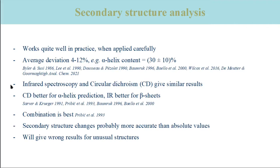We will encounter a second spectroscopic method to estimate secondary structure content: circular dichroism. Generally, infrared spectroscopy and circular dichroism give similar results, but circular dichroism is better to predict alpha helices, whereas infrared spectroscopy is better for beta sheets. Not surprisingly, the combination of both gives the best results. When analyzing the secondary structure of a protein under different conditions, the changes between the different conditions can probably be determined more accurately than the absolute values of secondary structure content.